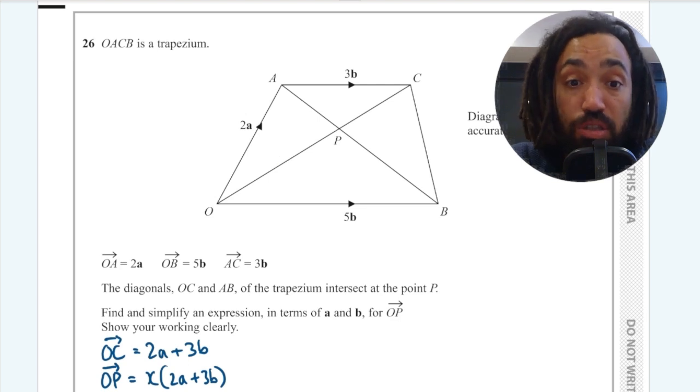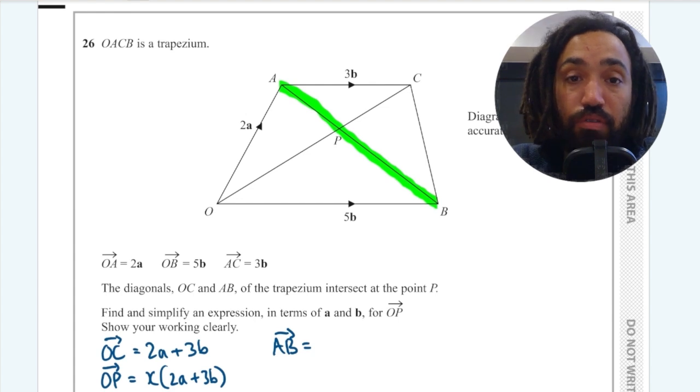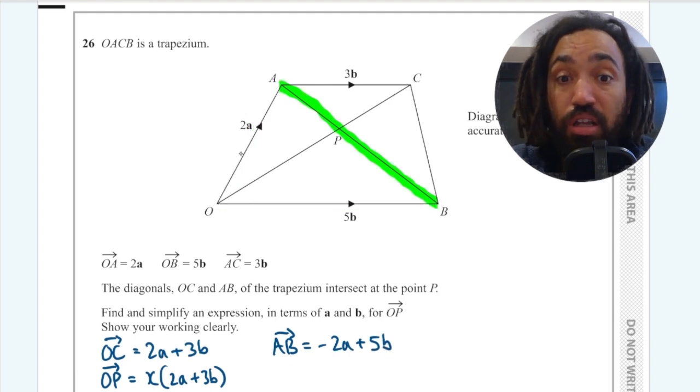And again, once we've done this, I would still insist that you try and find as many vectors as possible. Another one that we can find is AB. And AB, we could go from A to O and then O to B which is minus 2A plus 5B. And again, you're quite likely to get a mark for that as well. So it's always good to try and write as many vectors as you can.